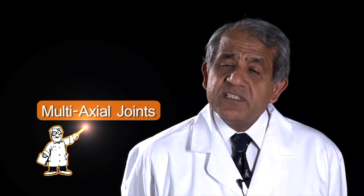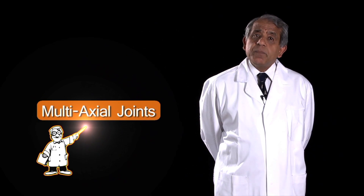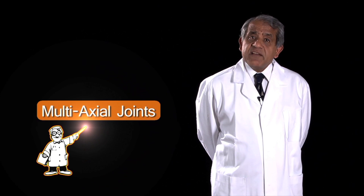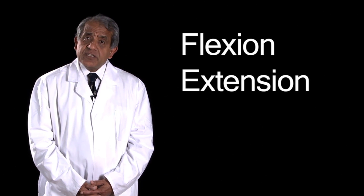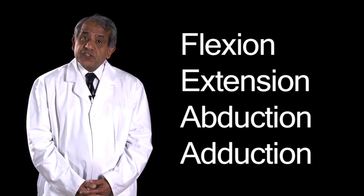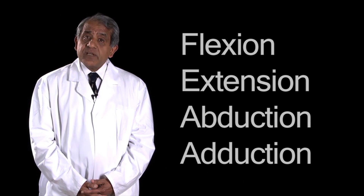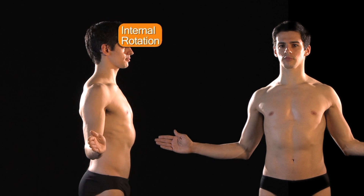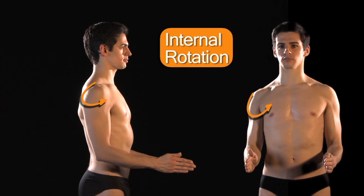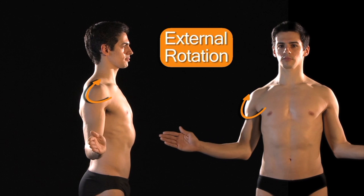In certain joints, there is so much versatility of movement that the individual parts can be moved about several different axes. Such multi-axial joints, best exemplified by the shoulder joint, are so versatile that not only are they capable of flexion and extension and abduction and adduction, but also so-called internal rotation and external rotation.